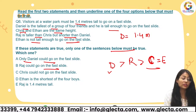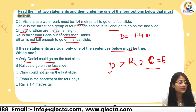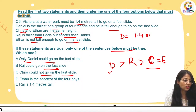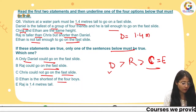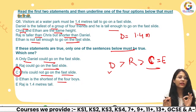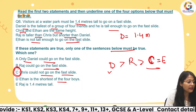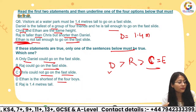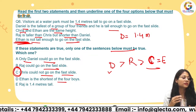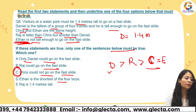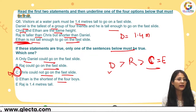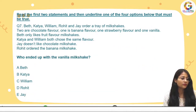We don't know Raj's exact height, so we can't be certain about him. Since Ethan and Chris are the same height, whatever Ethan cannot do, Chris cannot do either. Therefore, the right answer is C — Chris could not go on the fast flight. Is that clear to everyone? Moving on to question number seven.